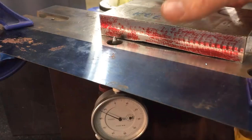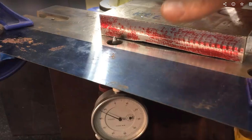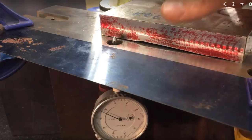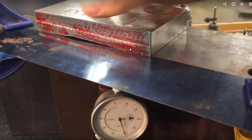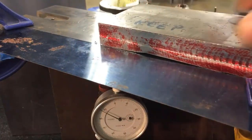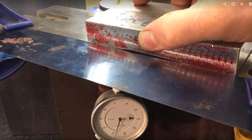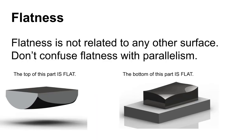The setup for measuring flatness: we have a nice flat surface, an indicator underneath, and as we drag back and forth left, right, in and out, we're evaluating the flatness of this side. It doesn't matter what's going on on the other side. This side may measure terribly when we evaluate flatness, but the opposite side could have pretty good flatness characteristics. That's the distinction — it's important to understand the difference between flatness and parallelism.